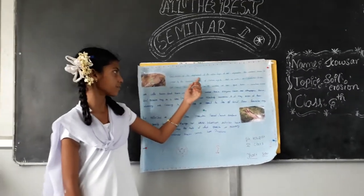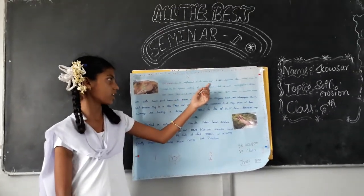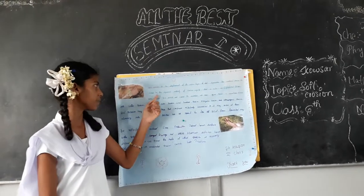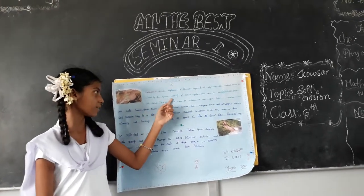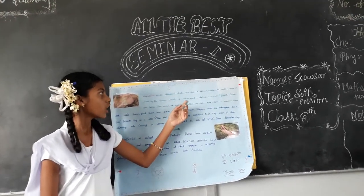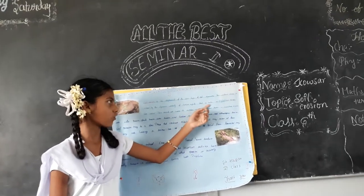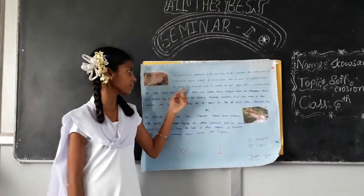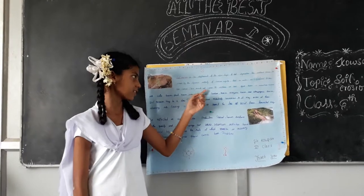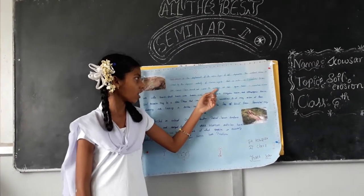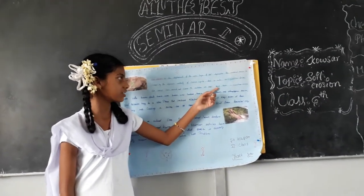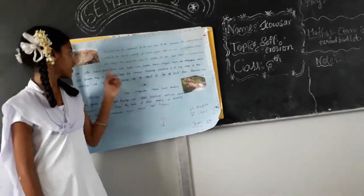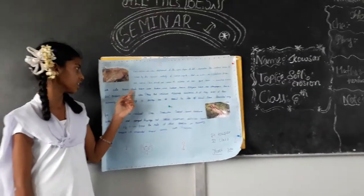Soil erosion is the dispersement of the upper layer of the deterioration. This natural process is created by the land of the captivity of erosive agents, i.e. water, ice, gases, snow, air, drink, plants, animals and humans.